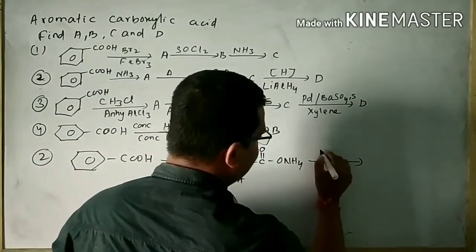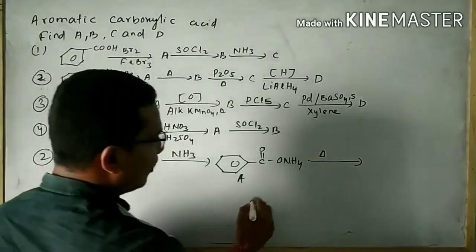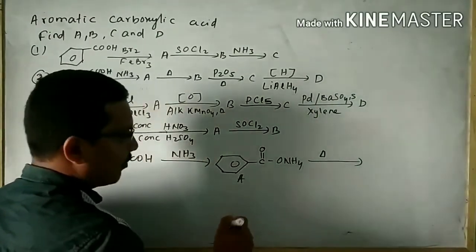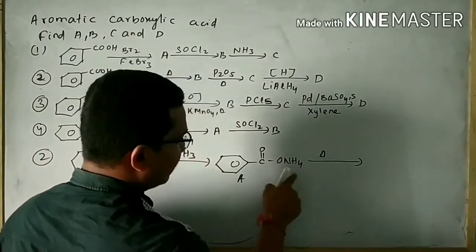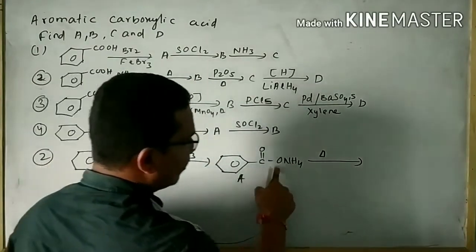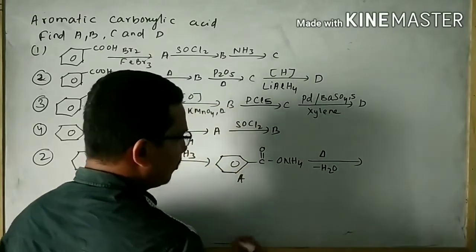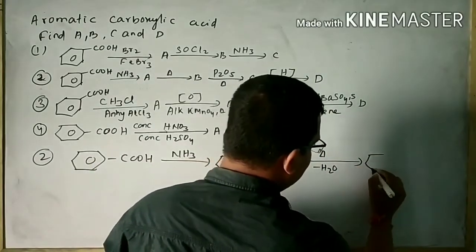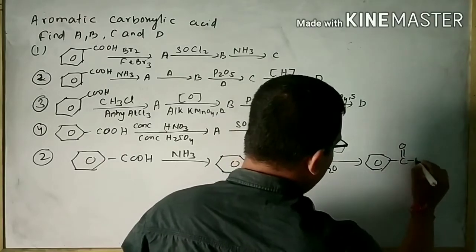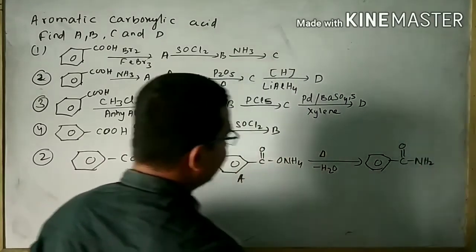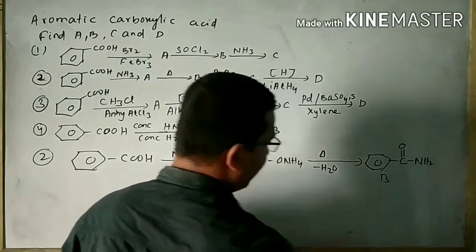Now it is subjected to heating. Heating means there is a loss of a water molecule. For the water molecule, we need 2 hydrogen from this and 1 oxygen atom. That means minus H2O. As a result, the product is your CONH2, that is your benzamide, and it is considered as the B product.